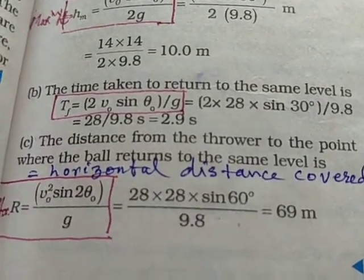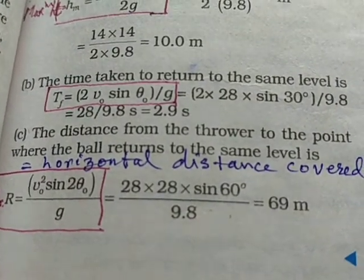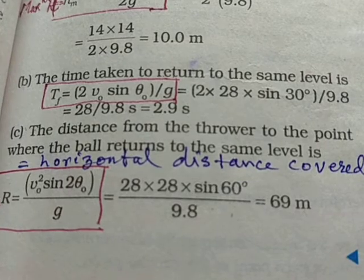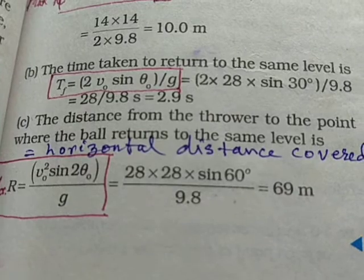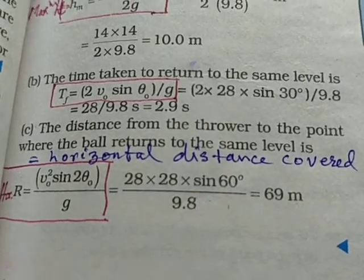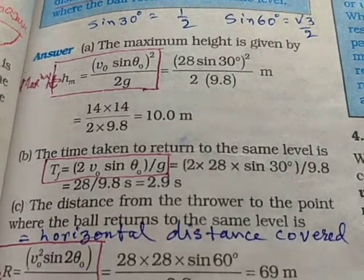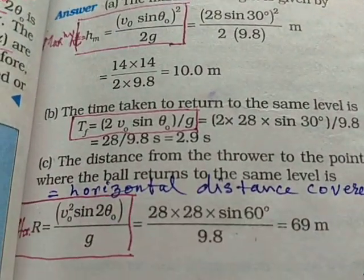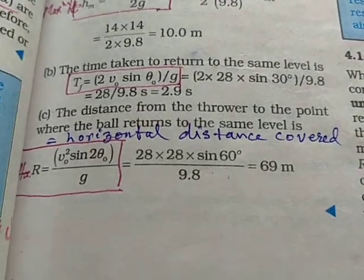So you have the total time of flight equal to 2 into 28 into sin 30 degree whole divided by the value of g that is 9.8. And then that on simplifying we get 2.9 seconds. So that means the projectile will go up and come back to the same height and will take 2.9 seconds in total.